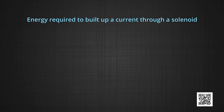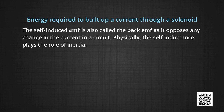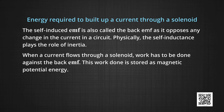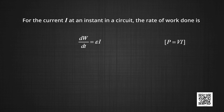The energy required to build up a current through a solenoid: the self-induced EMF is also called the back EMF as it opposes any change in the current in the circuit. As the current is trying to grow through the circuit, the back EMF is trying to pull it back, so self-inductance plays a role of inertia. When a current flows through the solenoid, work has to be done against the back EMF. This work done is stored as magnetic potential energy. For the current I at an instant in the circuit, the rate of work done is dW by dt which will be equal to E into I, since power is V into I.